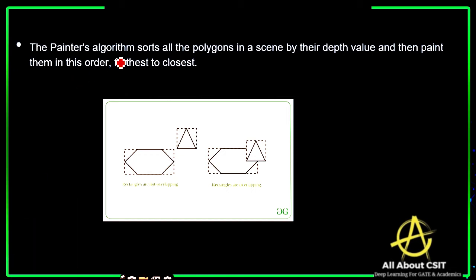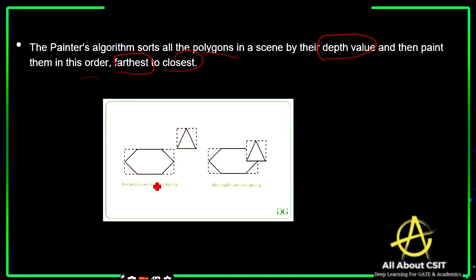The painter's algorithm sorts all the polygons in the scene by their depth value, then paints them in order from farthest to closest. If rectangles are not overlapping, you can paint in any order. But when they are overlapped, you must first draw the farthest object, then the closest overlapping one, completing the background image before drawing the nearest picture.